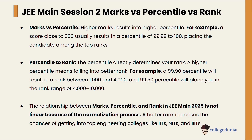Percentile and rank have an inverse relationship — a higher percentile means a better (lower) rank. For example, the 99.9 percentile results in a rank between 1,000 to 4,000, and the 99.5 percentile places you in the rank range of 4,000 to 10,000. This relationship is not linear because of the normalization process, but a better rank increases your chance of getting into top engineering colleges like IITs, NITs, and IIITs.